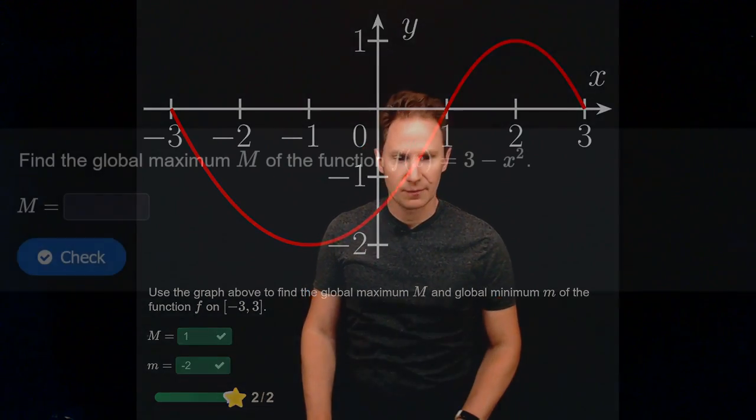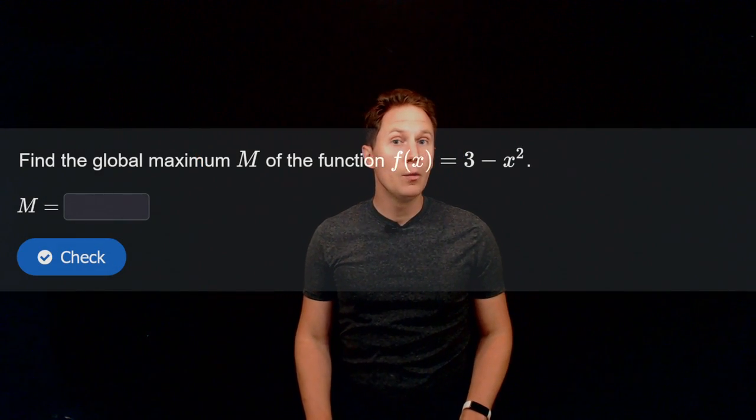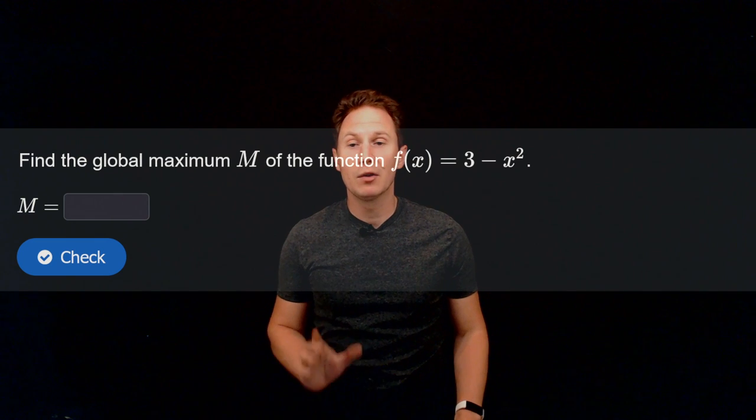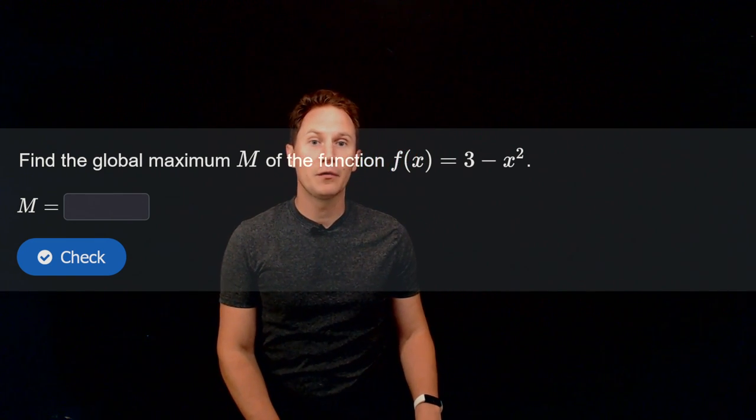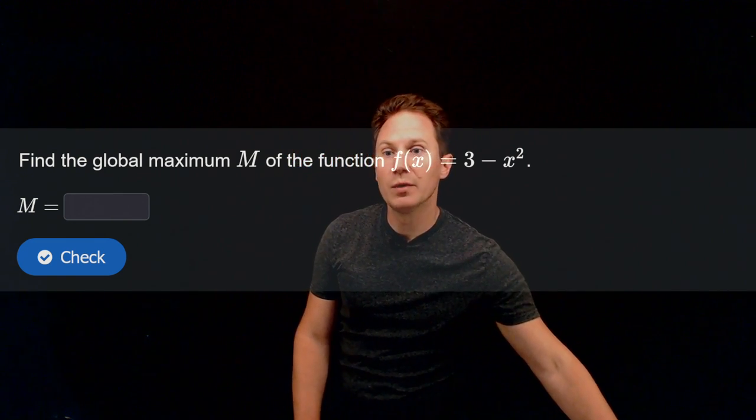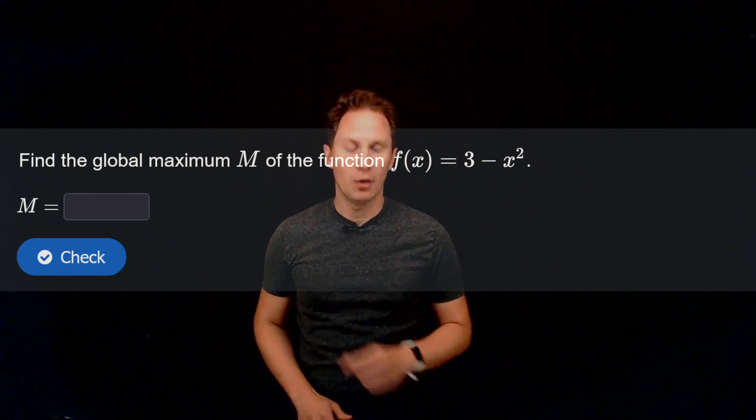Let's look at the next question. Find the global maximum capital M of the function f of x equals 3 minus x squared. So pause the video and input your answer in the box.